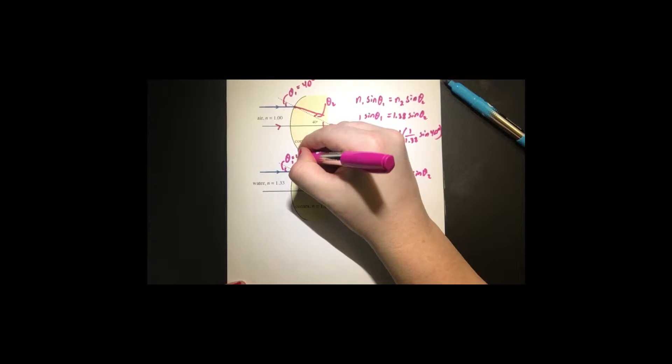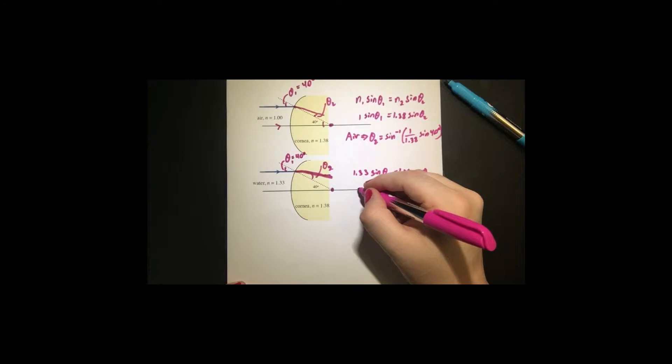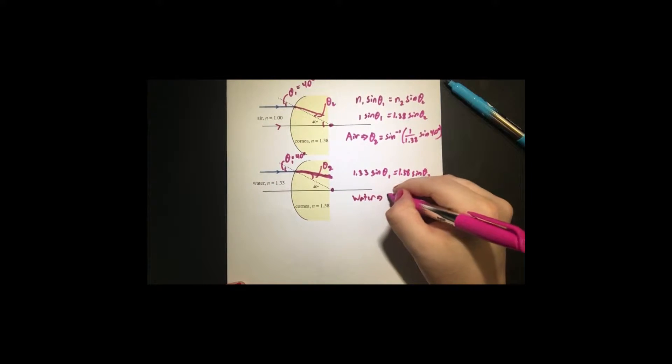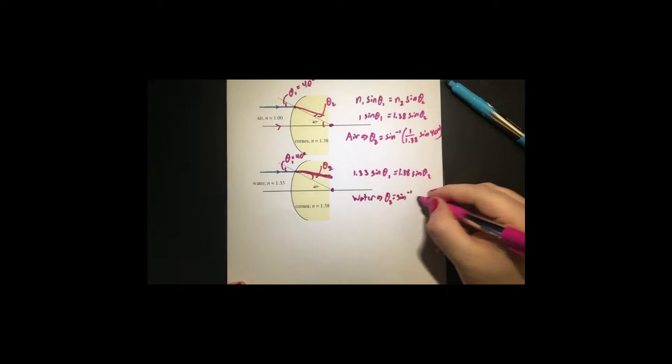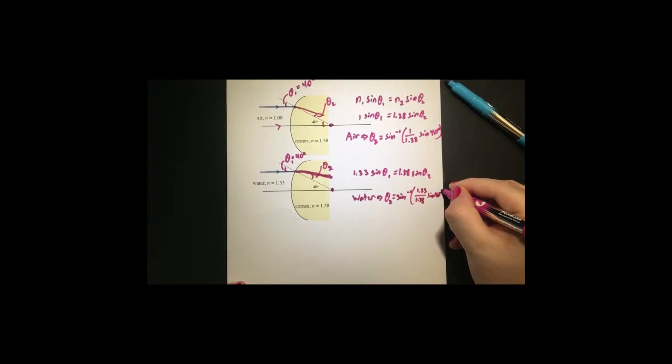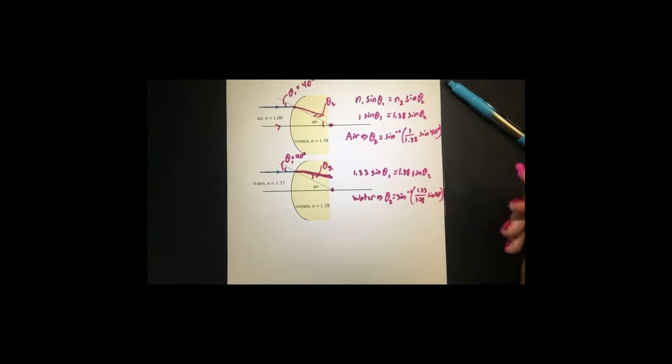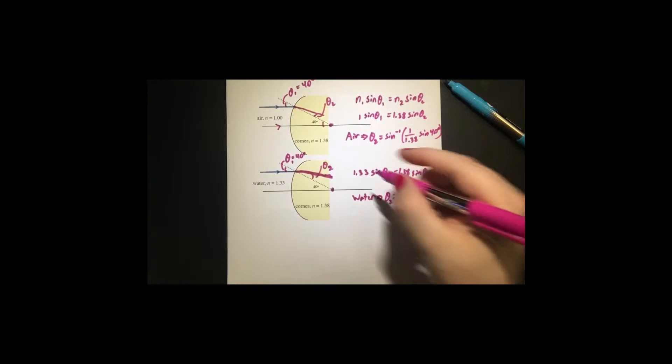Same here, theta 1 is 40 degrees. So for water, we get an equation of theta 2 equals the inverse sine of 1.33 over 1.38 sine of 40.